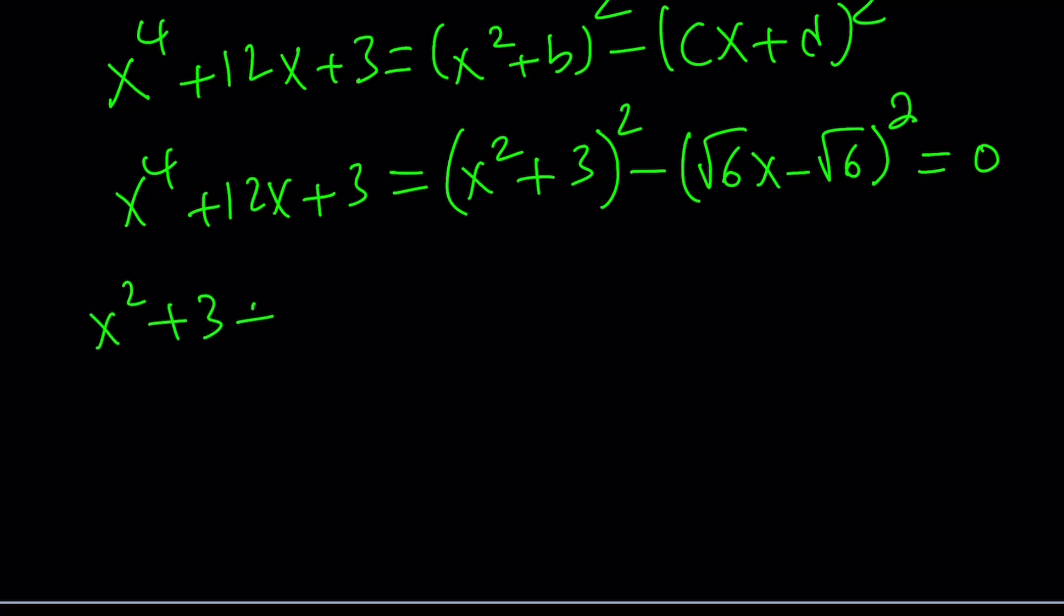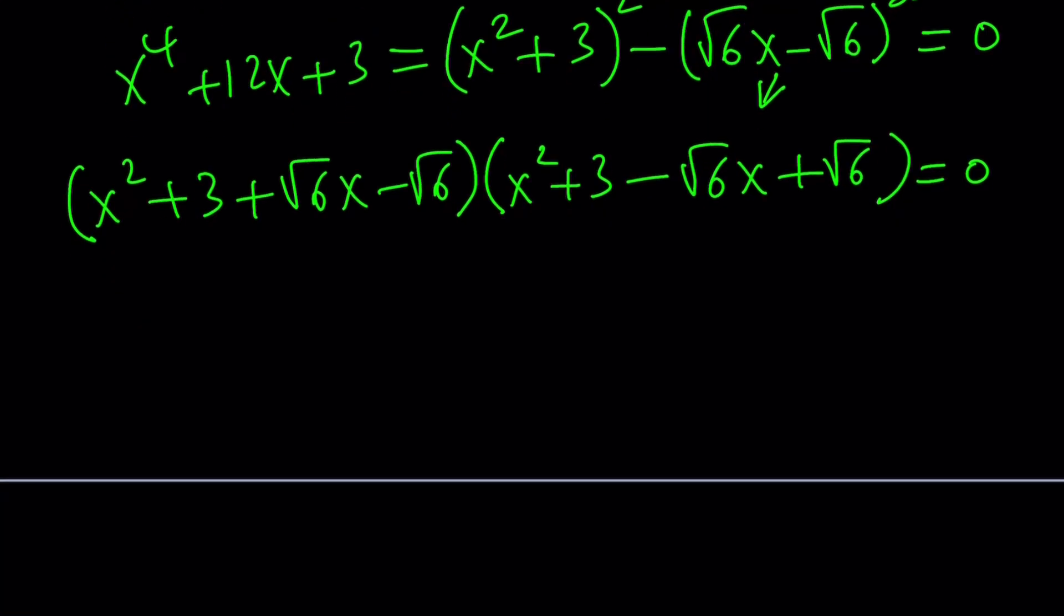x squared plus 3 plus square root of 6x minus square root of 6, and then x squared plus 3 minus square root of 6x plus square root of 6. Notice that I'm subtracting this, so I have to negate everything inside the parentheses. I just skipped a step. I hope you don't mind.